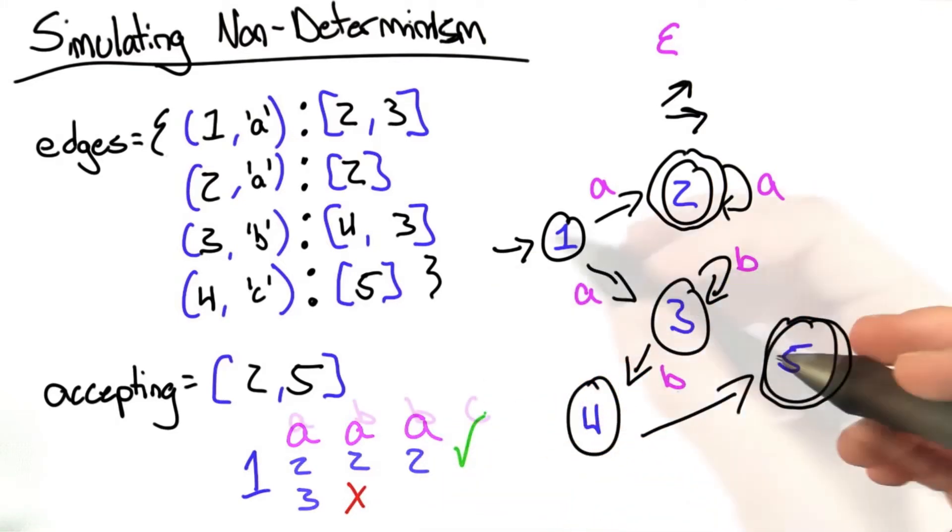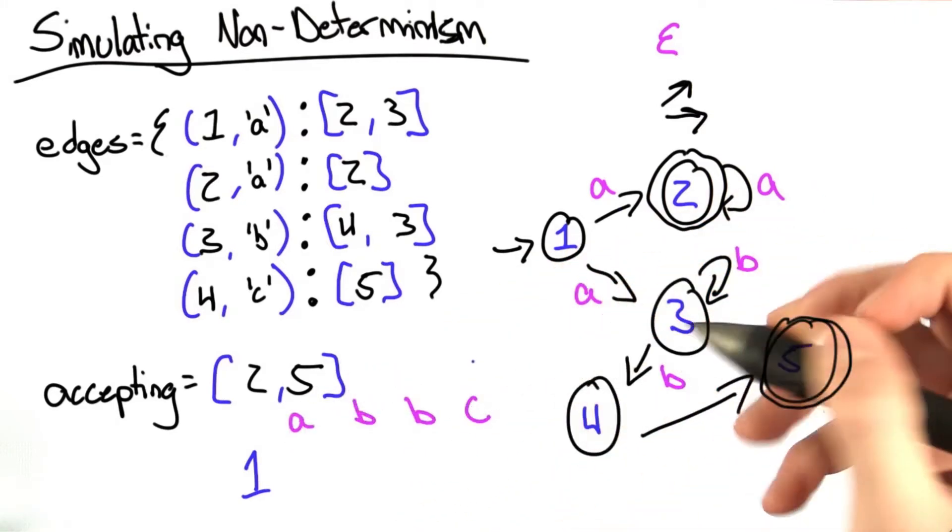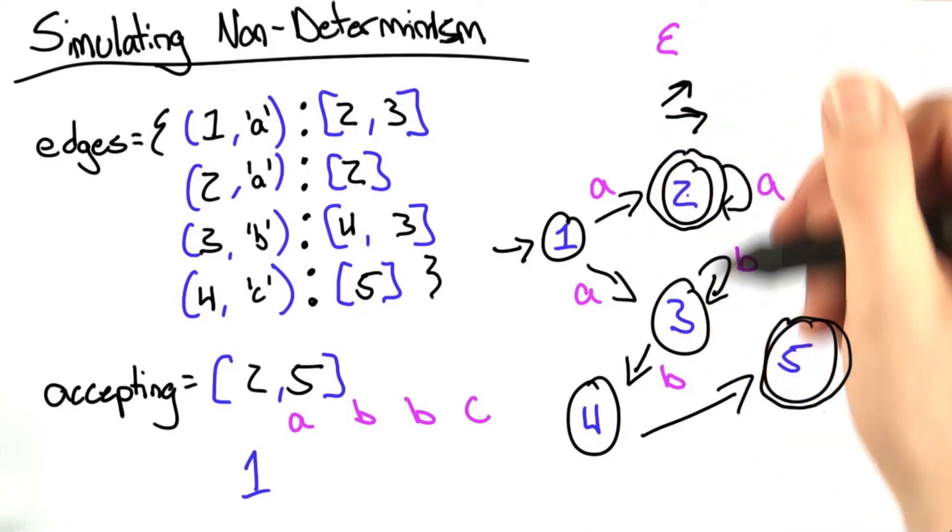Okay, let's do this once more. Here we have the string A, B, B, C. From A, we go to two states, 2 and 3.